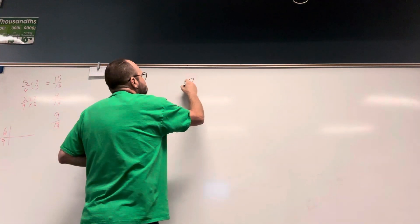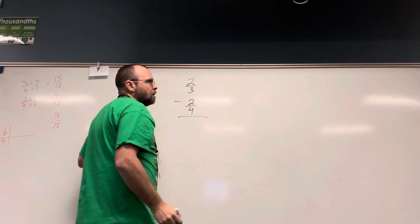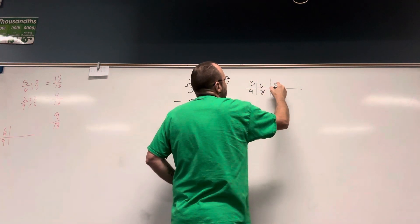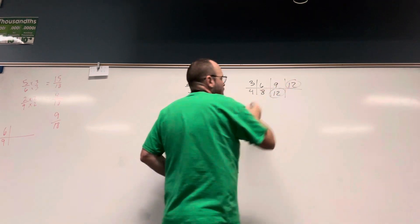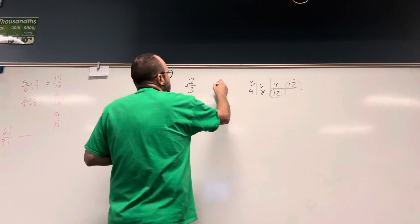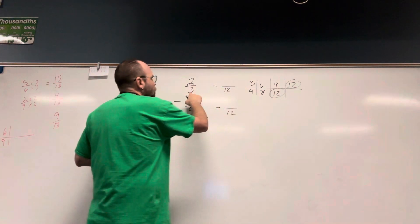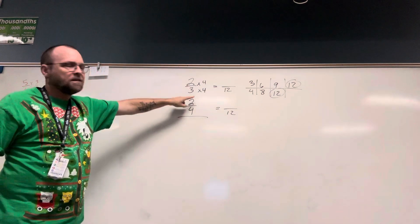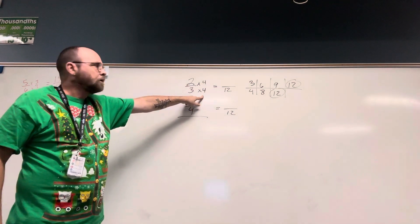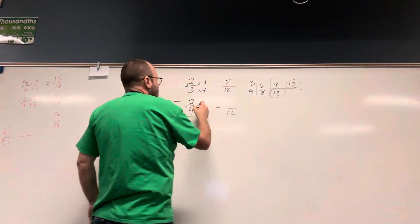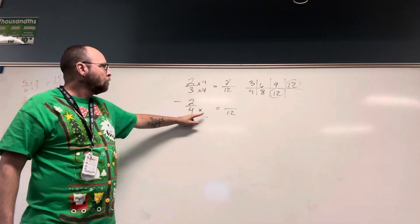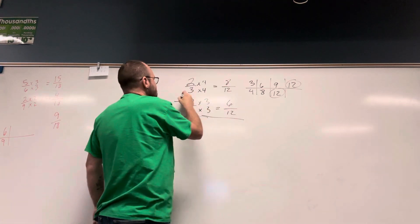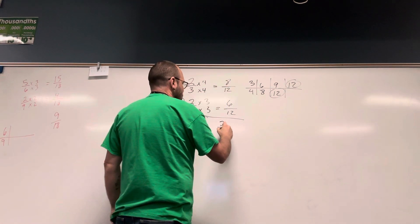Two thirds minus two fourths. The common denominator for 3 and 4 is 12. I change these so they're both over 12. 3 times 4 gave me 12, so if I multiply my denominator by 4, I must also multiply my numerator by 4 — and 2 times 4 is 8. 4 times 3 is 12, so 2 times 3 is 6. It's a subtraction problem: 8 twelfths minus 6 twelfths gives me 2 twelfths.